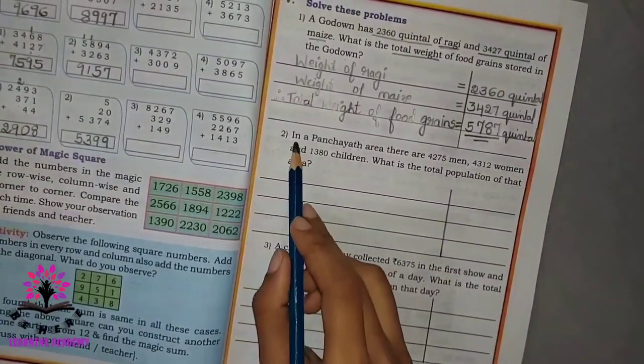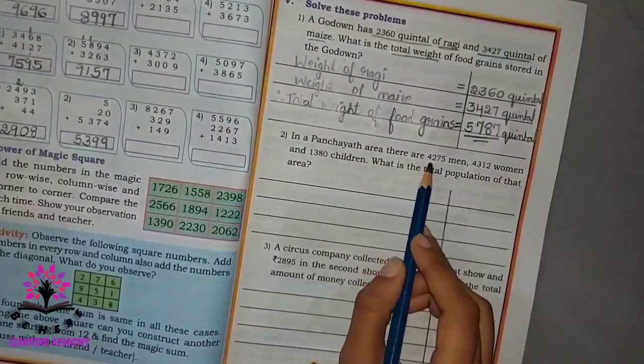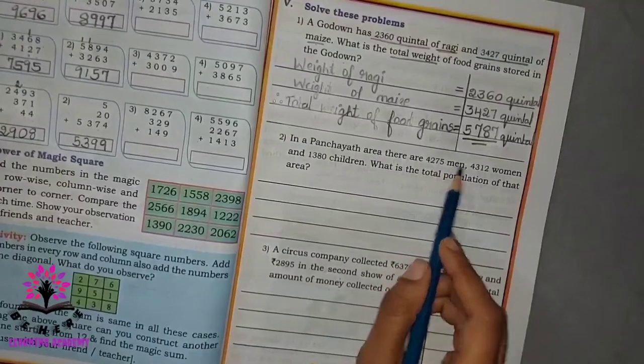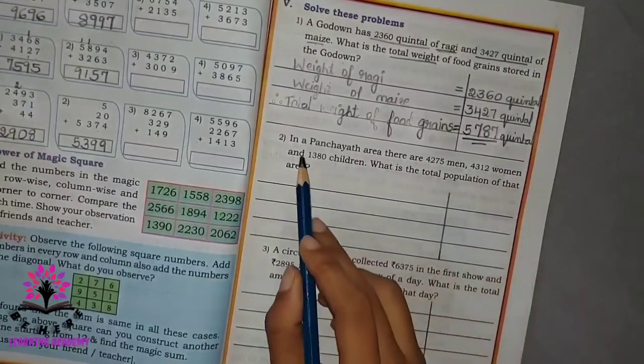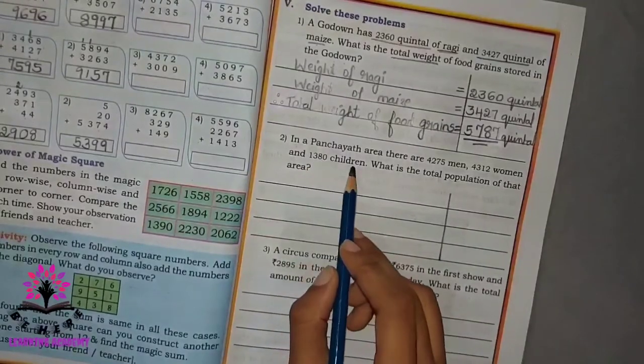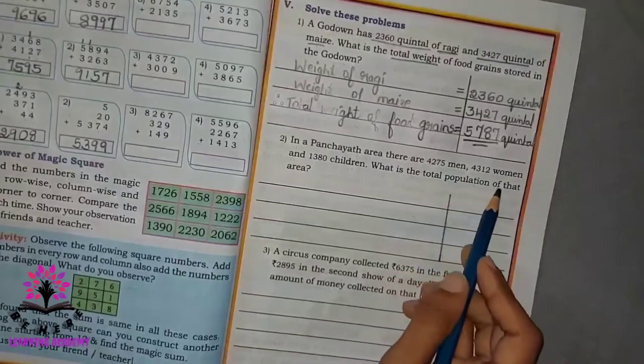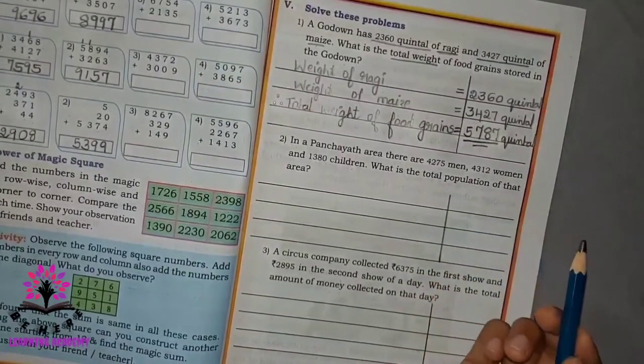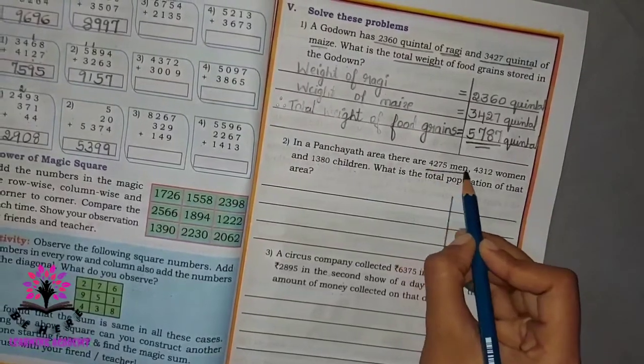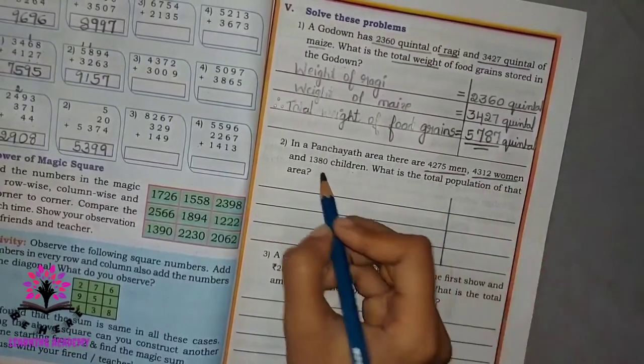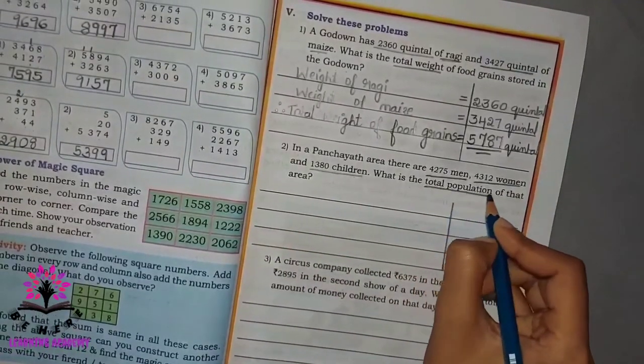Second problem: In a panchayat area there are 4275 men, 4312 women, and 1380 children. What is the total population of this area? So in the question they have given number of men, number of women, and number of children, and you have to find the total population.